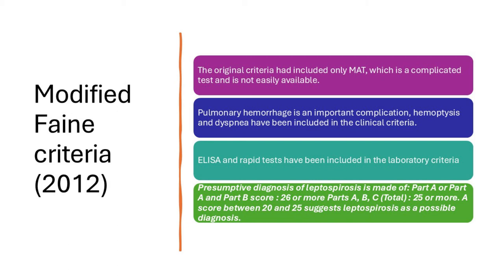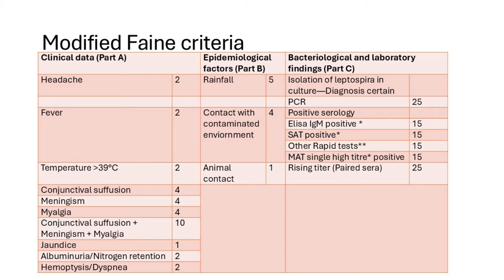In 2012, the Faine criteria were modified. The original criteria only included MAT, which is complicated and not widely available, so ELISA and other rapid tests were added to the laboratory criteria. Pulmonary hemorrhage — an important complication — was added to the clinical criteria. The scoring thresholds remained the same: parts A and B more than 26, or total more than 25. The modified criteria now include serology (ELISA), rapid tests, paired sera, and hemoptysis/dyspnea as clinical features.